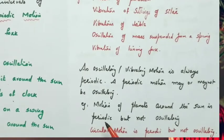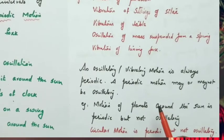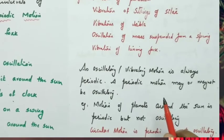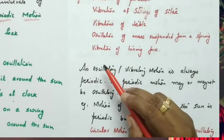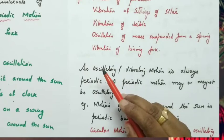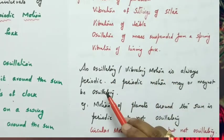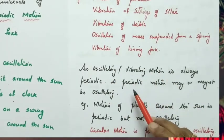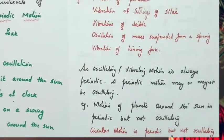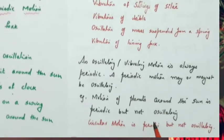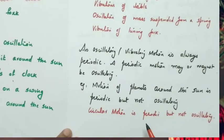However, a periodic motion may or may not be oscillatory. For example, planets revolving around the sun is a periodic motion but it is not oscillatory motion. Therefore, oscillatory or vibratory motion is always periodic, but a periodic motion may or may not be oscillatory. Circular motion is periodic but it is not oscillatory.